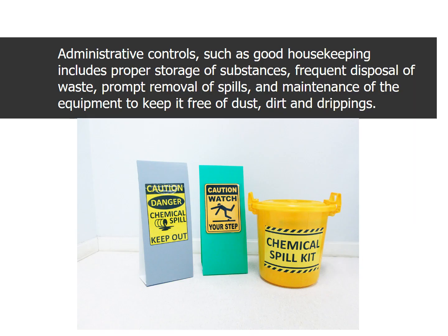Administrative controls, such as good housekeeping, include proper storage of substances, frequent disposal of waste, prompt removal of spills, and maintenance of equipment to keep it free of dust, dirt, and drippings.